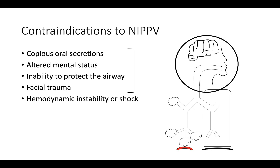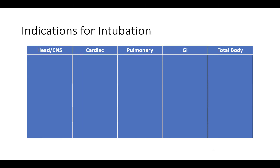Once your patient is placed on non-invasive, you know they are getting better because their respiratory rate and dyspnea improve and their PCO2 decreases. But what if they get worse? The next step is intubation and mechanical ventilation.